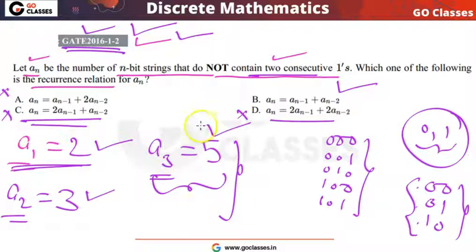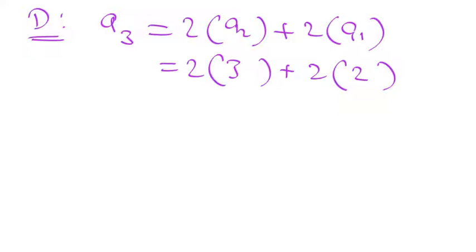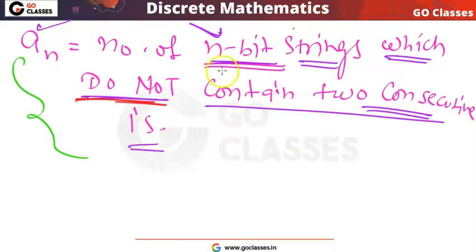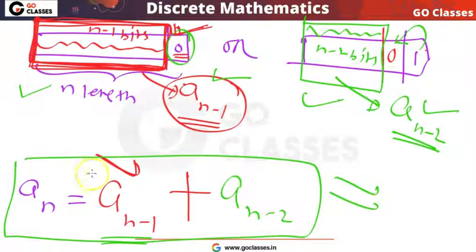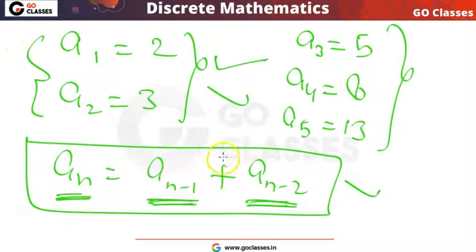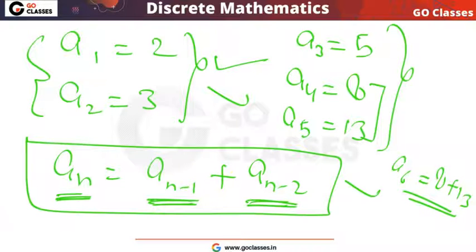Remember, this is a very simple question. In the GATE exam, you can solve it by the elimination method or use the formal recurrence approach. When you are preparing, focus on the correct concept — understand the correct way of solving the question. Only two cases are possible: last bit is 0, count Aₙ₋₁; last bit is 1, second-last must be 0, count Aₙ₋₂. So Aₙ = Aₙ₋₁ + Aₙ₋₂ with A1=2, A2=3. You can find A6 = 8+13=21, and so on. Thank you, everyone.